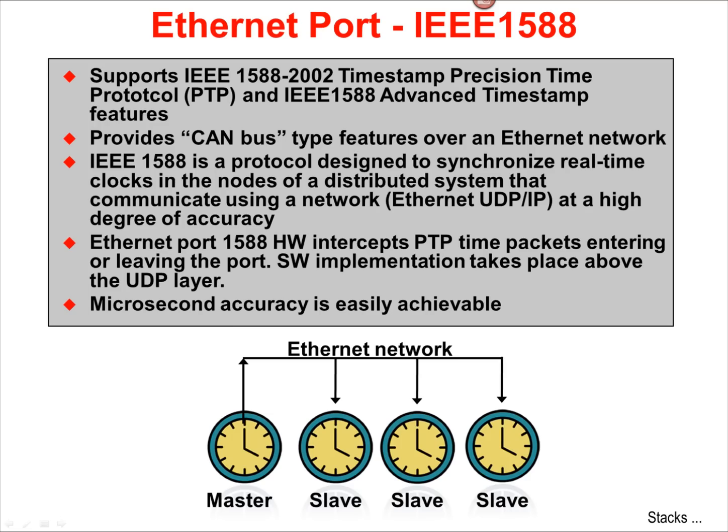IEEE 1588 adds a clock and ID address to permit synchronized operation between devices that have these added features. The clocks in an IEEE 1588 system are typically used to coordinate the activities of the primary applications executing on the system. If sensor data is time-stamped at a source, the time-stamped data may be correlated in post-acquisition operations.